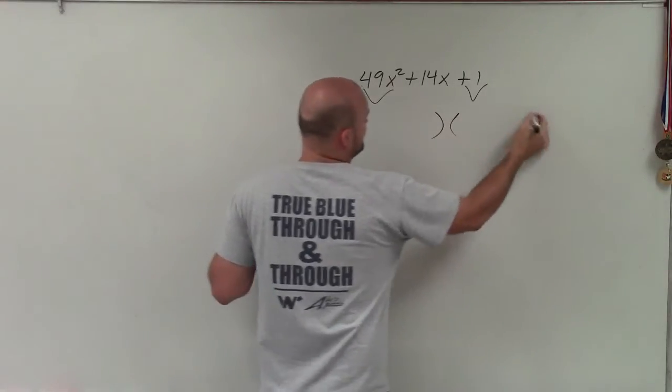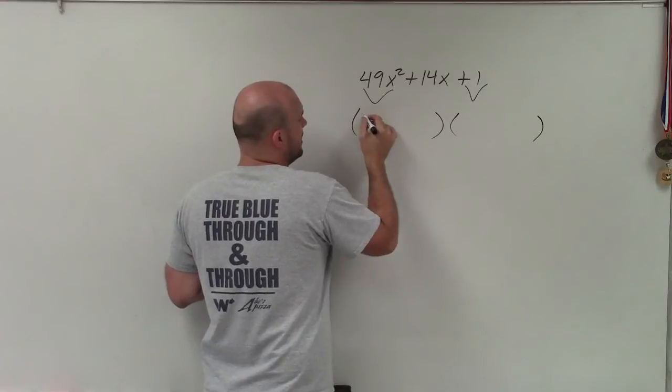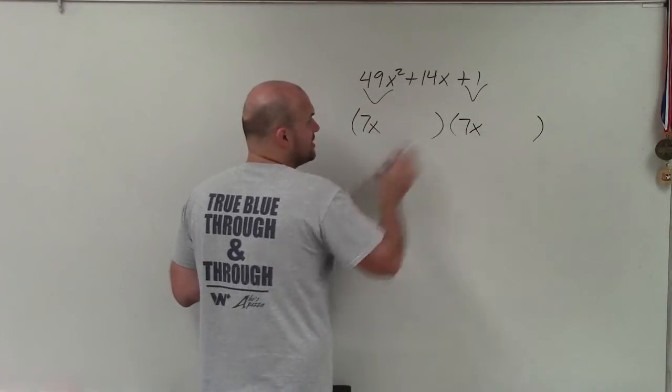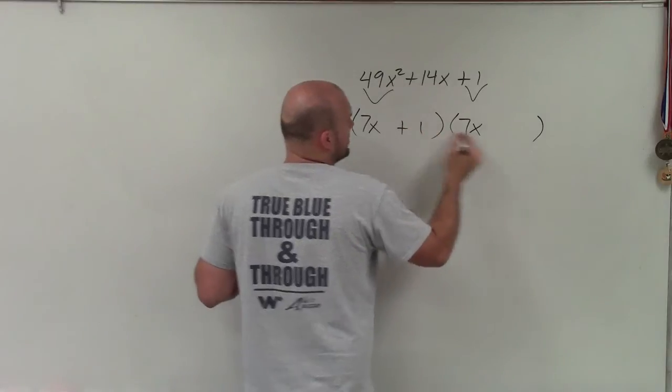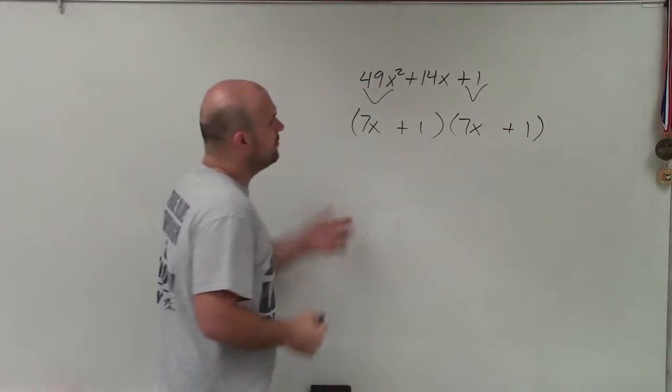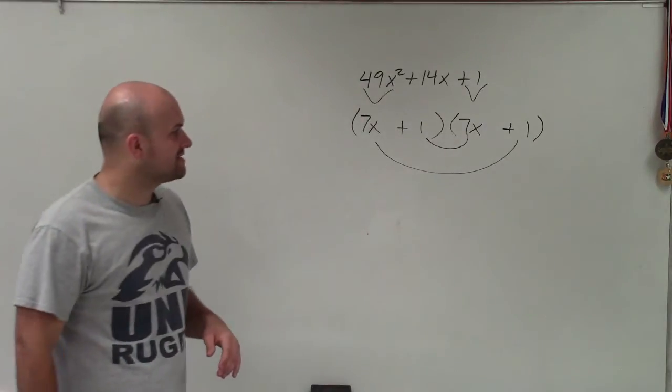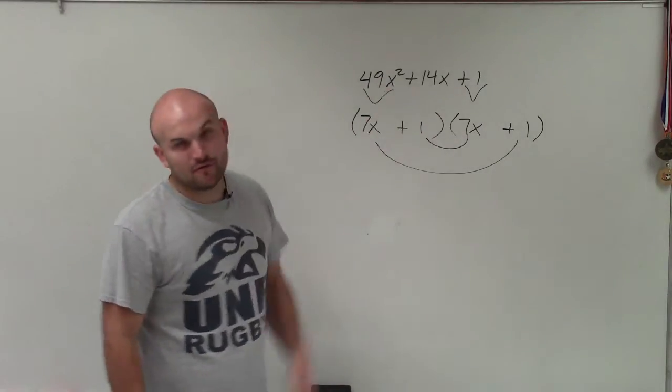If I'm going to write my two factors here, I would have 7x and 7x. I'm assuming these are going to be squares. And then this would be positive 1 times positive 1. Now, when I multiply here, does 1 times 7x and 7x times 1 add up to give me 14x? Yes, it does.